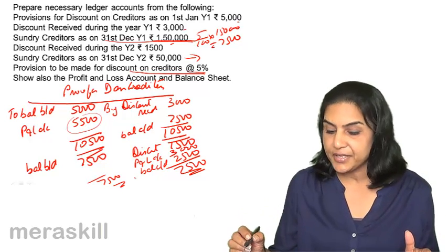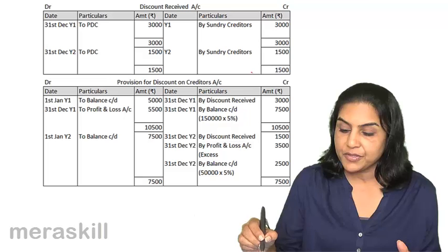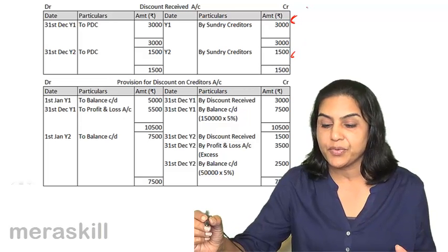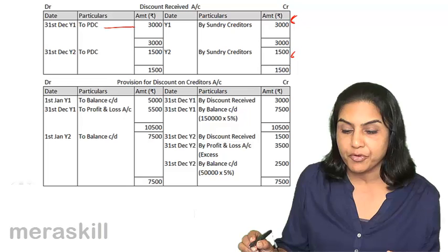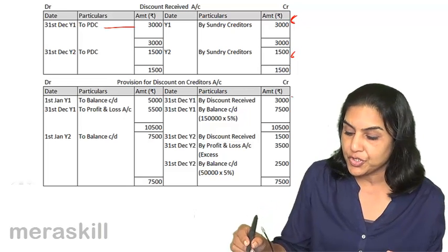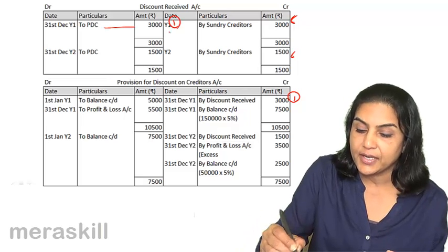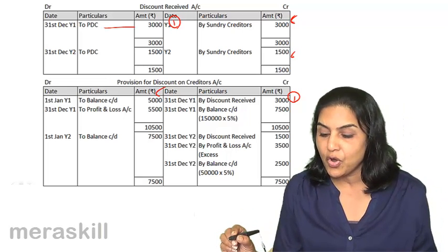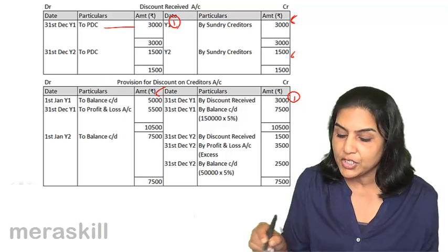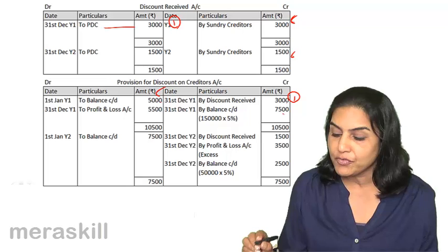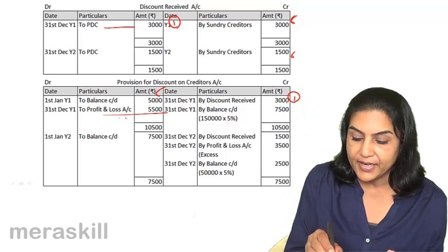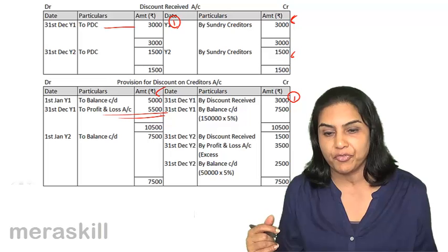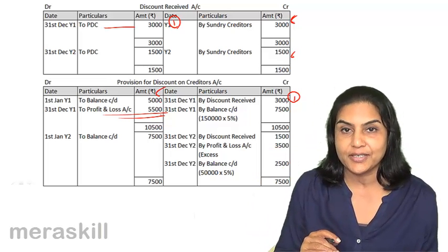Let us look at a neater presentation. In the discount received account, by sundry creditors in Year 1 we had 3000, and this was transferred to the provision account — this is the link. The provision account had an opening balance of 5000; we adjusted discount of 3000, leaving a remaining balance of 2000. We needed to carry a balance of 7500, so we created a provision of 5500 by crediting the profit and loss account — provision for discount on creditors is debited.